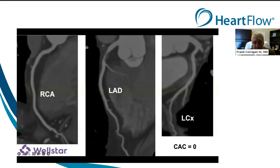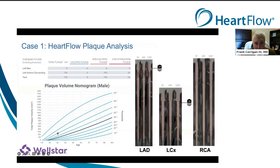Here are his CT images. His calcium score is zero, but you can see he has critical stenosis in his proximal LAD. As we know, a calcium score is really a surrogate for non-calcified plaque, and non-calcified plaque must precede calcified plaque — we're catching this patient earlier in his atherosclerosis process. Looking at the plaque in his LAD, he has 196 cubic millimeters of non-calcified plaque, 26% of which is low attenuated plaque — about 13% is low attenuated high-risk fatty plaque.